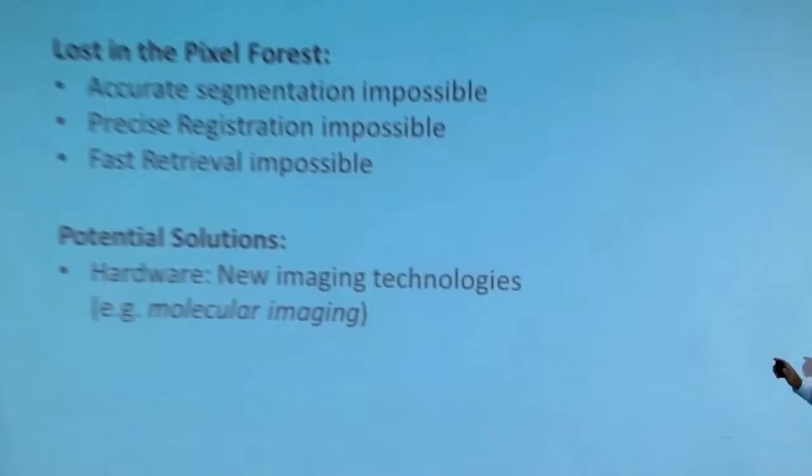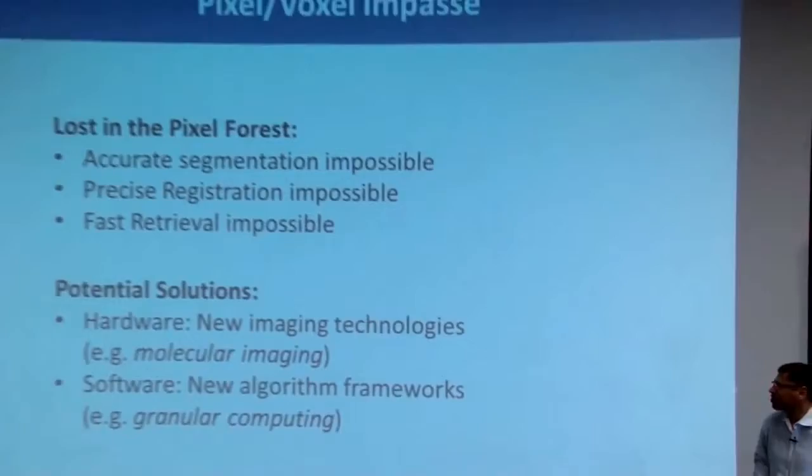What could be the potential solution? We need new imaging technologies. When I say molecular imaging as a potential way, I don't necessarily mean what we have today — something at the molecular level that doesn't capture pixels, but captures tissue types as groups and regions. From the software side, we need a new algorithm framework that works granularly — capturing granules, not pixels. We've been trying to do that with uniformity in segmentation, but of course it doesn't work, because when information is lost at the hardware and sensor level, you cannot recover it at the software level.